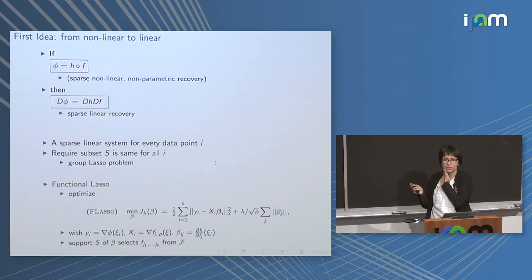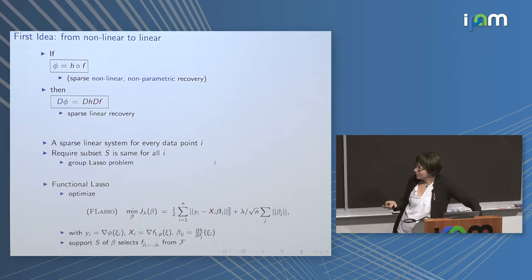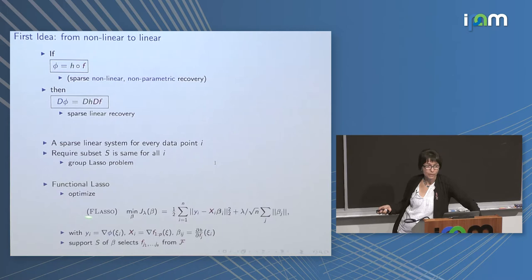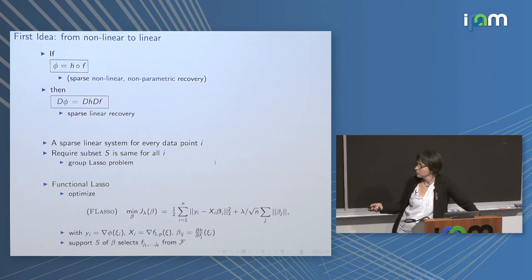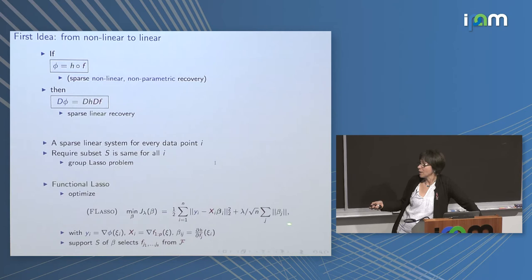The penalty turns on and off a group of coefficients corresponding to one function in the dictionary. I have a separate linear regression at each point — X, Y, and beta all change from point to point. I have no hope to recover beta itself; the only thing I can recover, and want to recover, is the support of beta — which betas are zero and which are non-zero. This selects the functions from the dictionary. It doesn't tell me what h is, but it selects the functions.